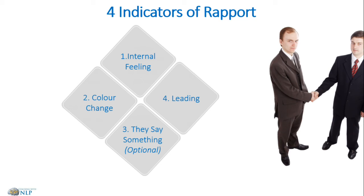While we're matching and mirroring, we're actually pacing the other person's experience. The fourth indicator of rapport is leading — this is where, if you have a sip of your drink, shortly after the person you're with also has a sip of their drink. Or you uncross your legs and the other person then uncrosses their legs. This is leading: the other person unconsciously follows what you do.